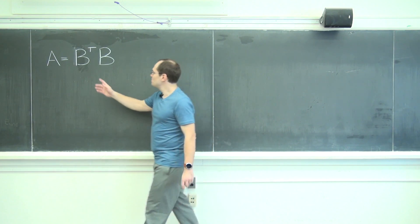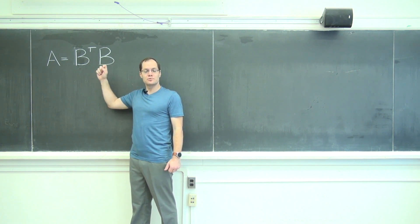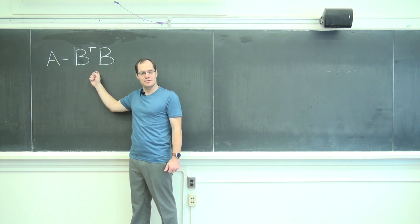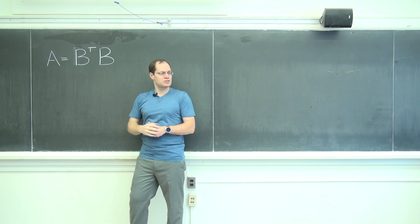We'll talk about the product B transpose B for any matrix B. You'll recall that it is always compatible regardless of the shape of B, so I'm not even supposing that B is a square matrix here.